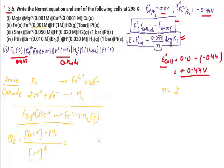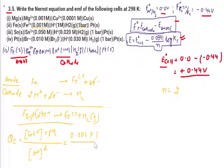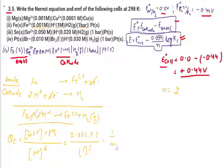The concentration of Fe²⁺ is 0.001 M, the pressure of H₂ is 1 bar, and [H⁺] = 1 M. So QC = (0.001 × 1) / (1)² = 0.001 = 10⁻³. Therefore QC = 10⁻³.